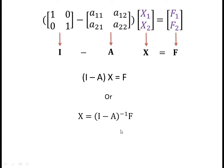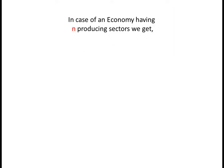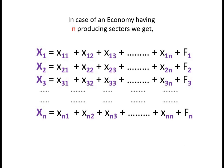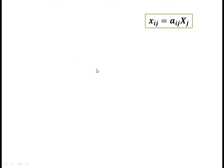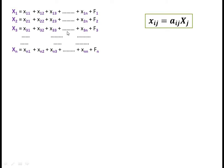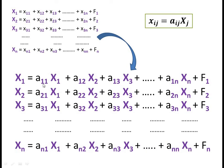Now, in the case of an economy having n producing sectors, we get n simultaneous equations for the flow of output among the producing sectors. Using the input coefficient aij, we can convert the output flow equations into a system of equations expressed in terms of the input coefficient aij.